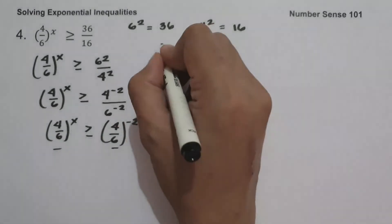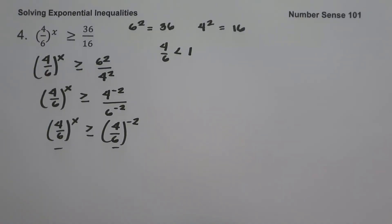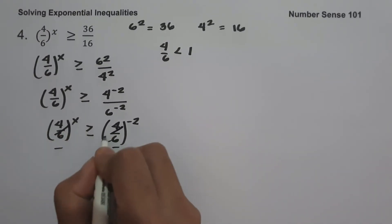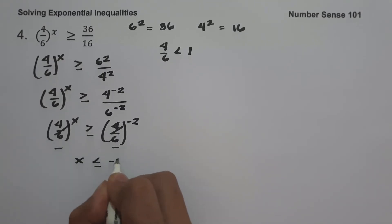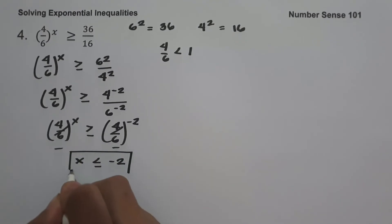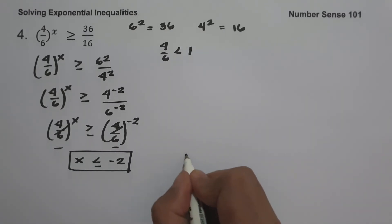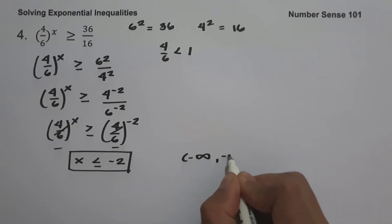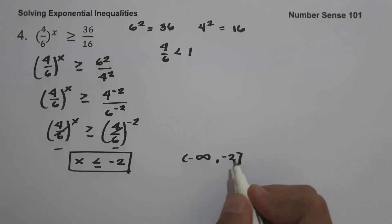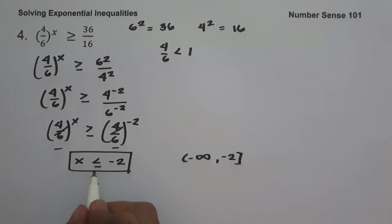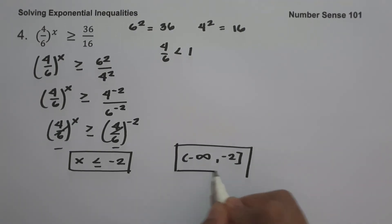Canceling the base and reversing the inequality gives x less than or equal to negative 2. Therefore, the solution set is from negative infinity up to negative 2, included. We use a bracket because our inequality symbol is less than or equal to, meaning negative 2 is included in our solution. And this will be our answer.